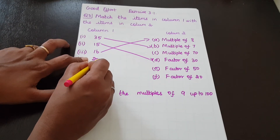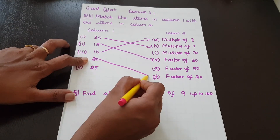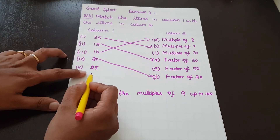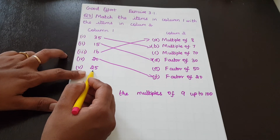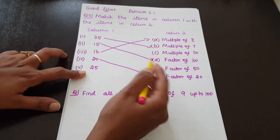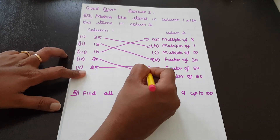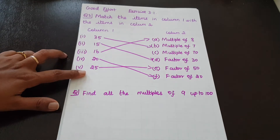So 25 is a factor of 50. We have a match here.